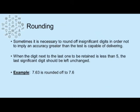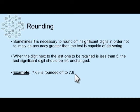Also important in the clinical lab is rounding. Sometimes it's necessary to round off insignificant digits in order to not imply that accuracy is greater than the test is capable of delivering. When the next digit after the last one to be retained is less than five, the last significant digit is left the same. For example, 7.63 — we only need to the tenths place, so we're rounding off the three. Since three is less than five, the six stays the same and the three just drops off, giving us 7.6.